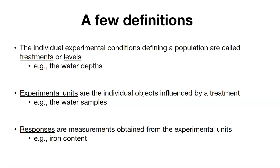And then the last thing, the responses, are measurements obtained from the experimental units. So in this case, this is the iron content. You can think about this as being the response variable. If we were doing something like a simple linear regression, this would be what we're predicting. And in this case, with the ANOVA, it's also what we're predicting.